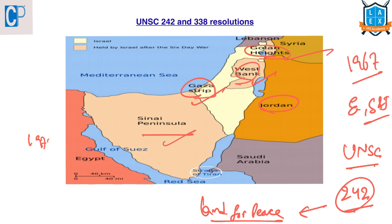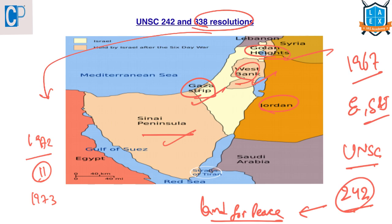In 1972, Palestinian gunmen killed 11 Israeli athletes at the Munich Olympics. In 1973, Egypt and Syria launched a surprise attack on Israeli forces in the Sinai Peninsula and Golan Heights. Following these events, the UNSC passed Resolution 338, which called for an immediate ceasefire and stated that UNSC Resolution 242 must be implemented immediately to establish peace in the Middle East.